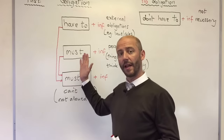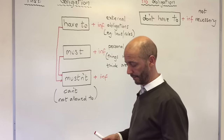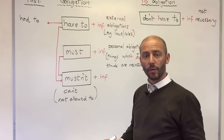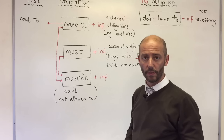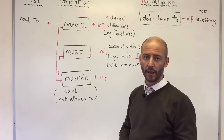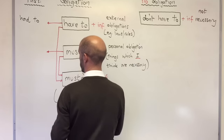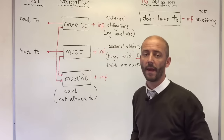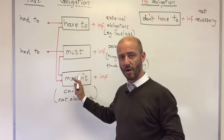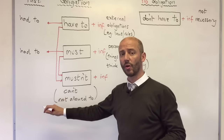I just want to briefly look at past obligation. The past of have to is had to. For example: when I was at school, I had to wear a uniform. For the past of must — there is no past form of must for obligation, so to talk about the past we again use had to. For example: I had to go to the bank this morning. Equally with mustn't, we have no past form, so we have to use couldn't or was/weren't allowed to.